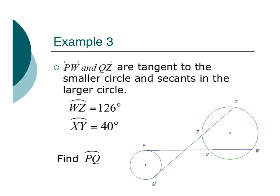So here we have two lines, P, W, and Q, Z, that are tangent to the small circle and secant to the larger circle. All right? We can see that in the diagram pretty clearly. Well, we know that W, Z. Let's just start writing this stuff down. It's 126. This right here is 40. X, Y is 40 degrees. Well, I can totally find out this angle from that. And remember, we're trying to find our arc, P, Q, here. So I'm going to basically just work across.